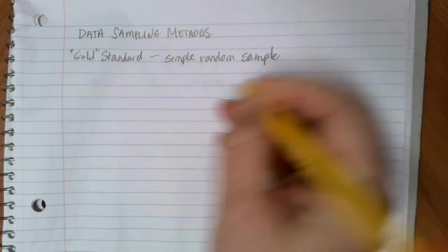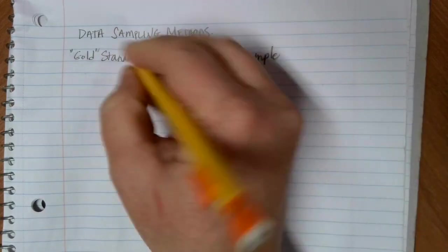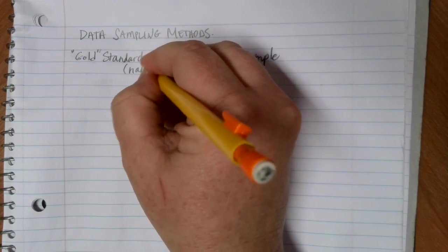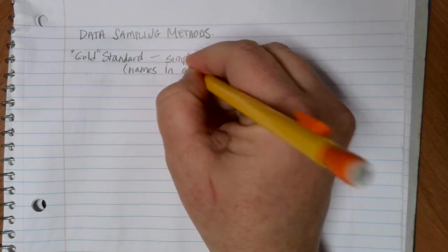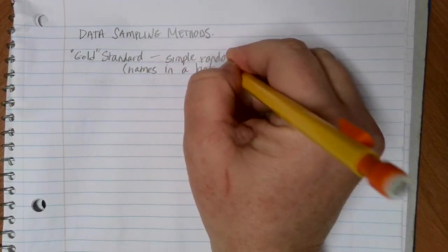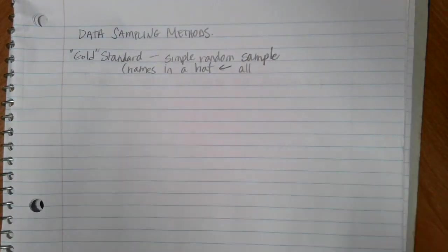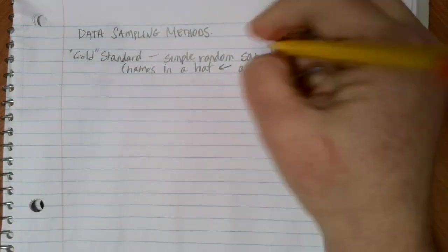The idea of a simple random sample, my favorite analogy for this is just names in a hat. Every single person in the population is in the hat, and we're going to shake it up and pick names out one at a time.